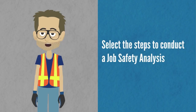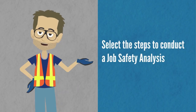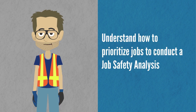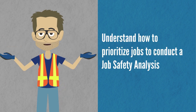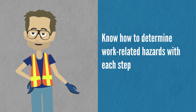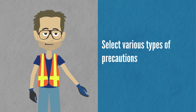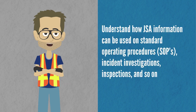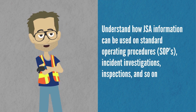After taking this training, you'll be able to select the steps to conduct a job safety analysis, understand how to prioritize jobs, know how to break the job or task into steps, determine work-related hazards within each step, select various types of precautions, and understand how JSA information can be used on standard operating procedures, incident investigations, inspections, and so on.